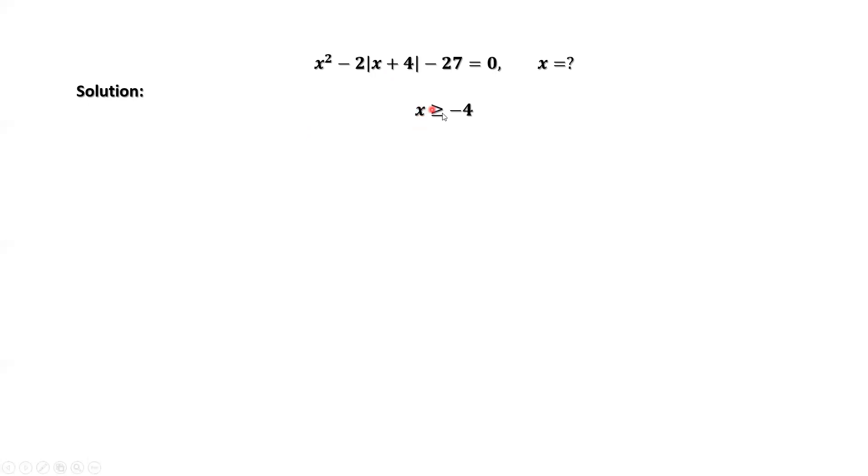x is bigger than or equal to negative 4. If x is bigger than or equal to negative 4, the inside part is positive. We can drop the absolute value sign. Simplify this equation we have x squared minus 2x minus 35 equals 0.